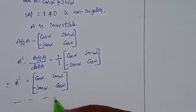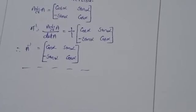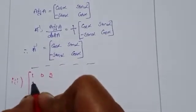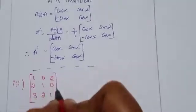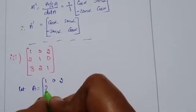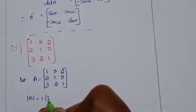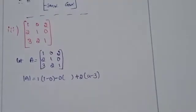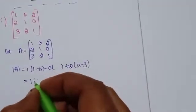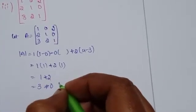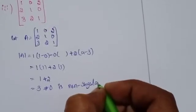Next, the third problem — a 3x3 matrix. Let A equal to 1, 0, 2, 2, 1, 0, 3, 2, 1. Det(A) equals 1 times (1 minus 0) minus 0 times anything plus 2 times (4 minus 3), which equals 1 plus 0 plus 2 equals 3. Since det(A) equals 3, it is not equal to 0, so it is non-singular.